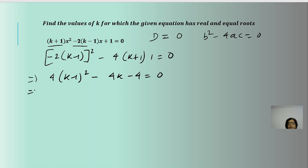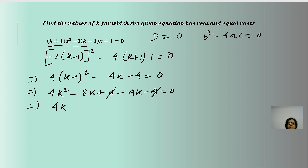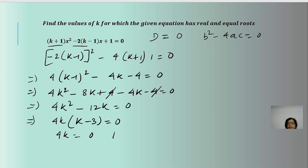Simplifying, we get 4(k - 1)² - 4k - 4 = 0, which expands to 4k² - 8k + 4 - 4k - 4 = 0. The +4 and -4 cancel, leaving 4k² - 12k = 0. Taking 4k as common, we get 4k(k - 3) = 0, giving k = 0 or k = 3.